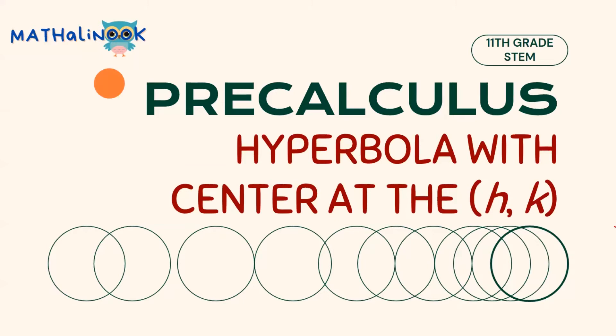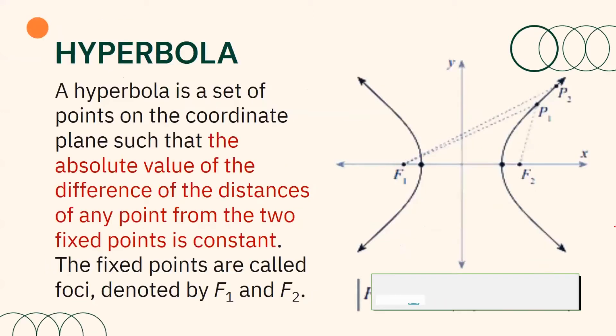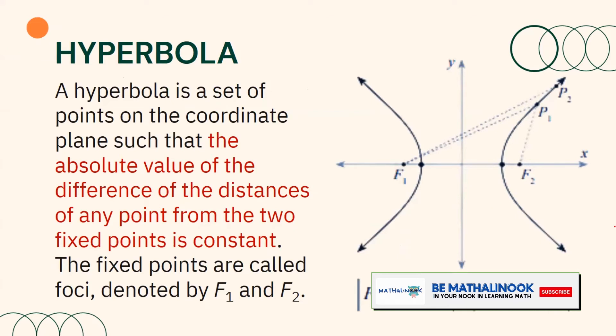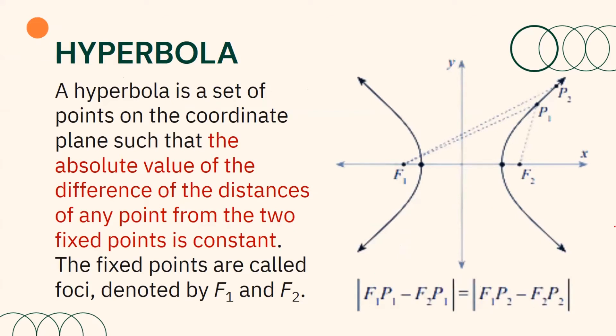Good day everyone! In this video, we will discuss about the hyperbola with center at h, k. We have defined the hyperbola as a set of points on the coordinate plane such that the absolute value of the difference of the distances of any point from the two fixed points is constant.